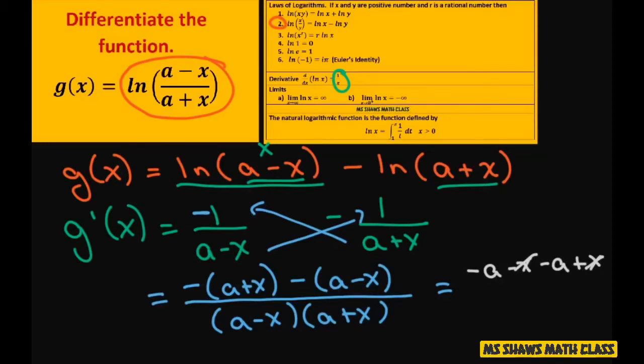And so this is going to end up being, and I just took care of that. So the answer is going to be negative 2a divided by, if you want you can combine this. This is the a squared minus x squared, your difference of squares.